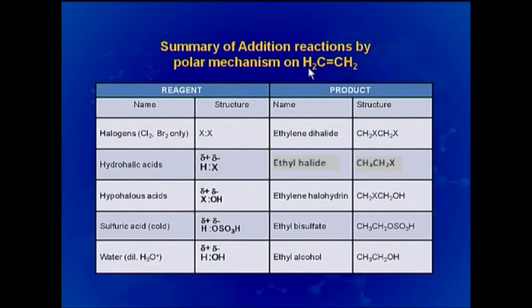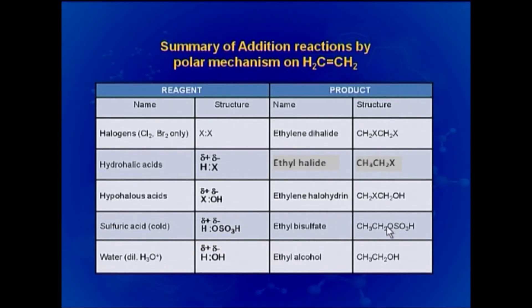A summary of addition reactions by polar mechanism on a simple ethylenic system CH2=CH2: with halogens (chlorine or bromine) the product is ethylene dihalide; with hydrohalic acids HX the product is CH2X–CH2X; with hypohalous acids the product is ethylene halohydrin; with sulphuric acid the product is ethyl bisulphate; and with water in the presence of acid the product is ethyl alcohol.